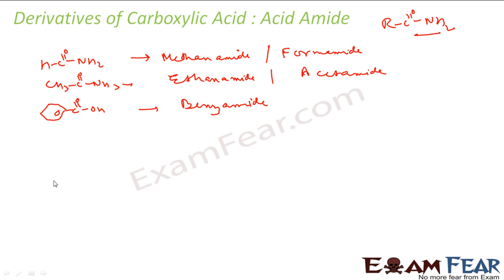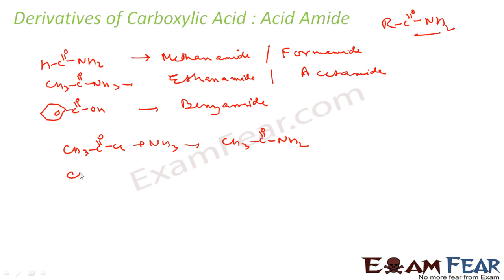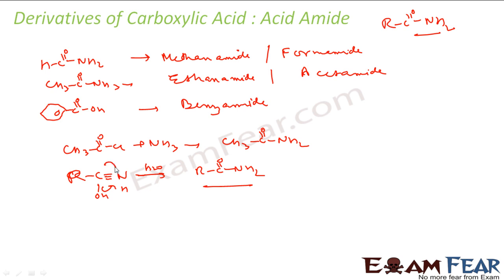Preparation: amides can be prepared by aminolysis of acid chlorides — for example, CH3COCl reacted with NH3 gives CH3CONH2. They can also be prepared from carboxylic acids reacting with NH3. Additionally, hydrolysis of a nitrile (R-C≡N) gives the amide R-CONH2, as water adds across the triple bond step by step to yield the amide.